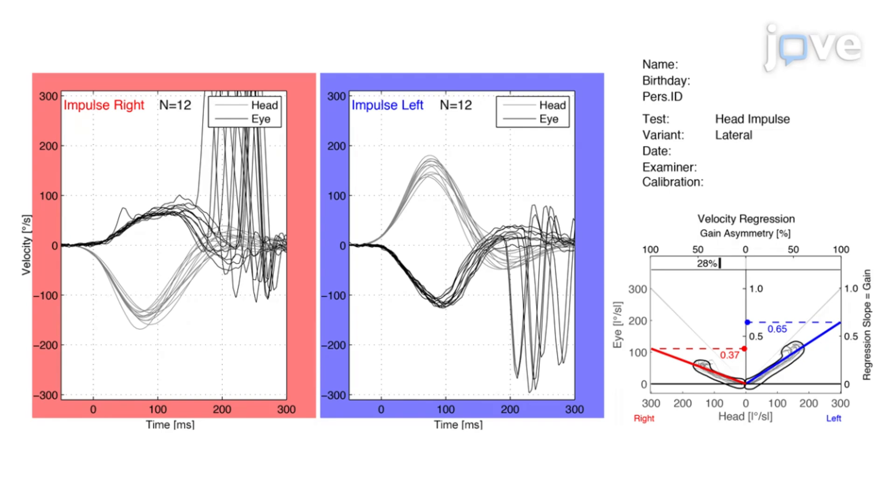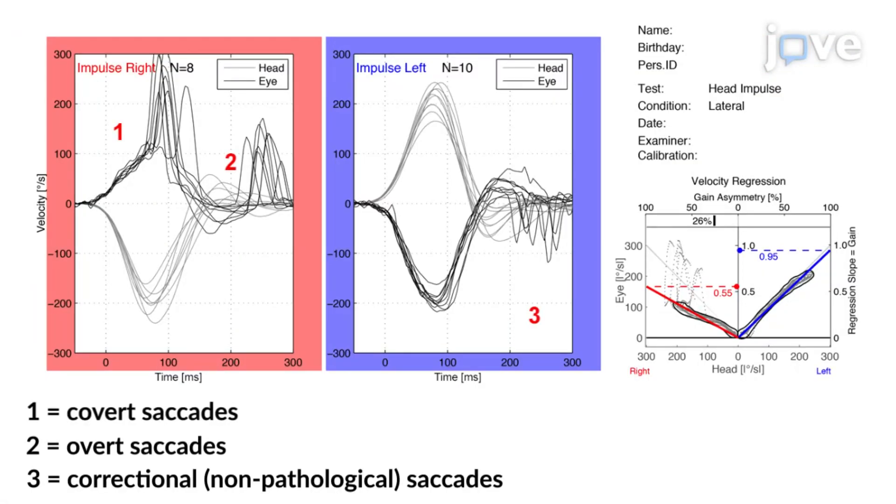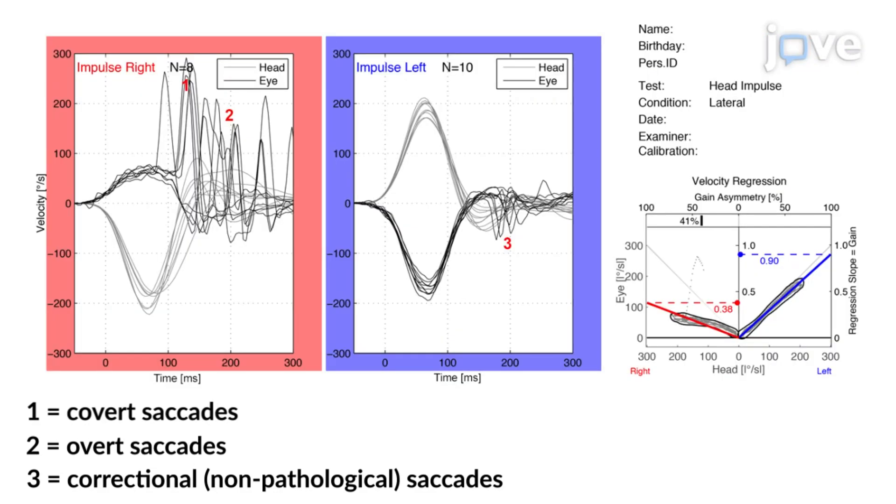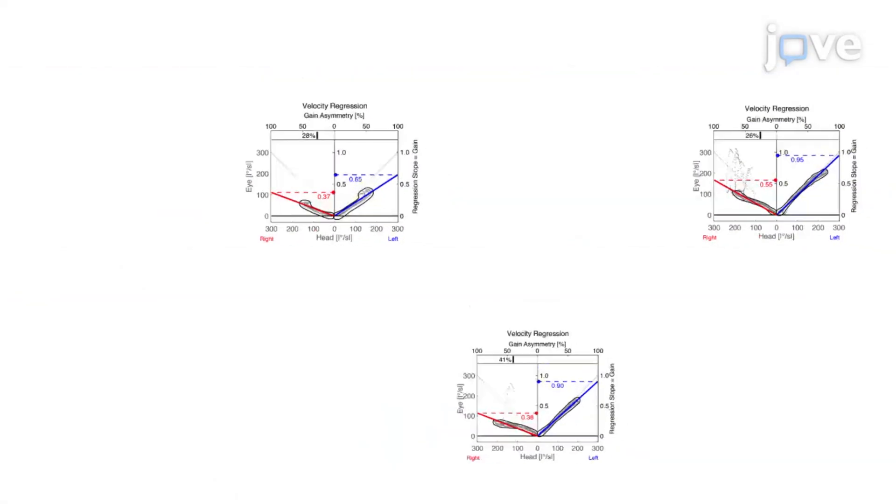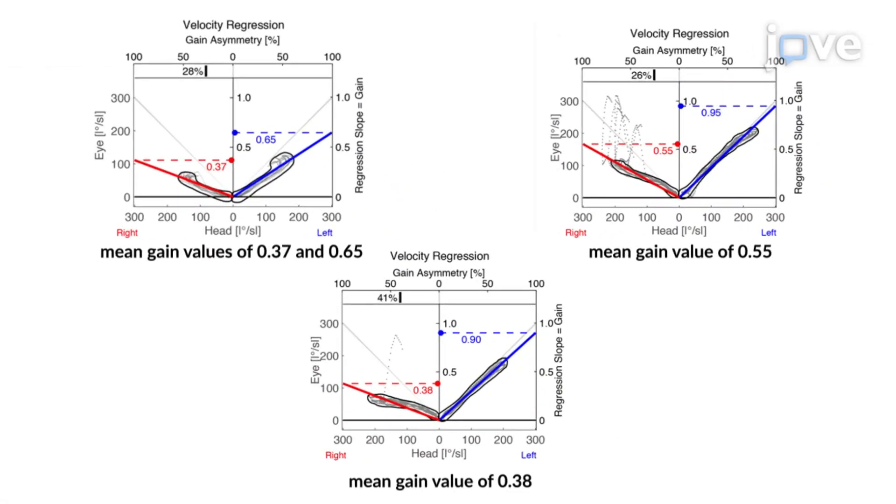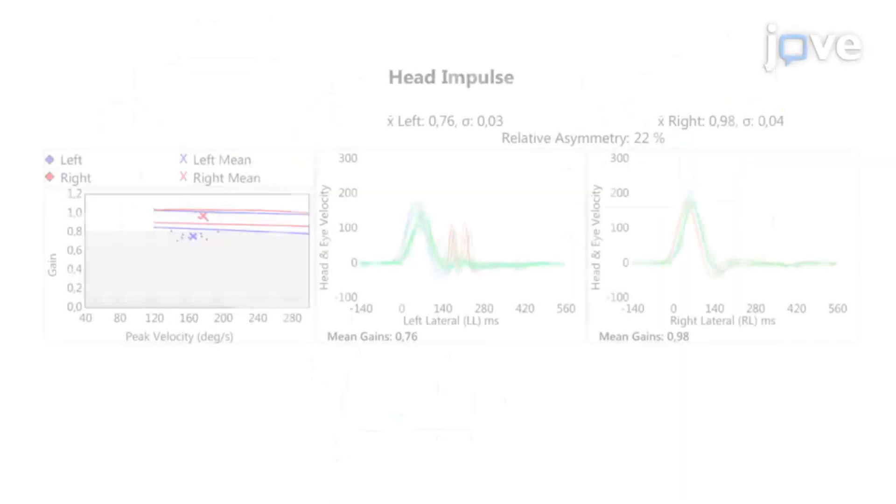Following complete testing of all 6 SCCs with VHIT system A, overt saccades are seen after head movement has stopped. Covert saccades are seen during the head movement, and sometimes a mixture of both are seen. With overt or covert saccades, accompanying mean gain values also need to be too low in order to be truly pathological.